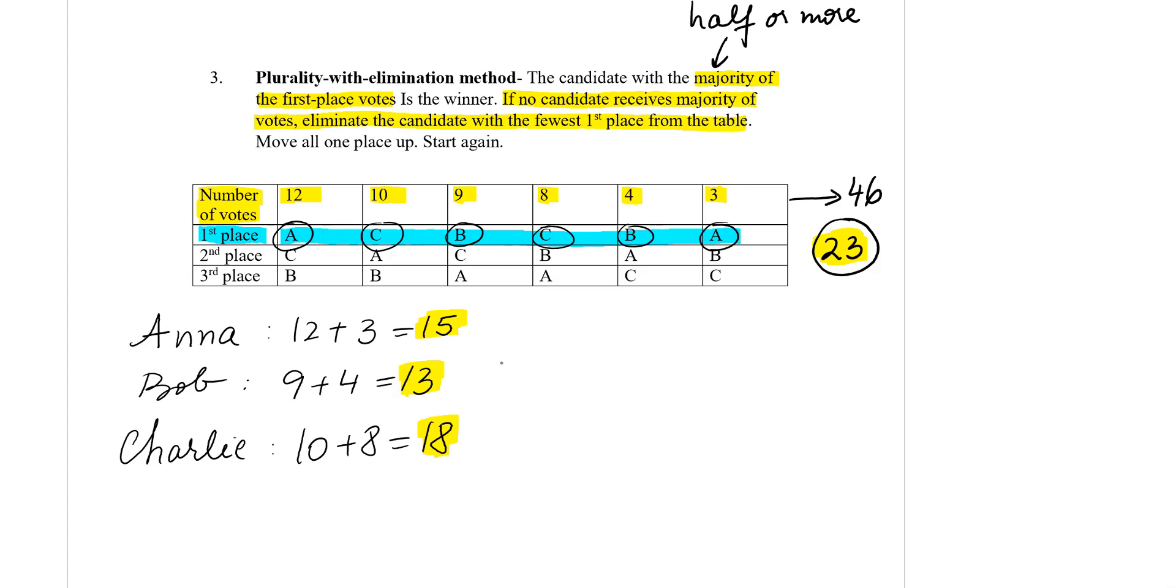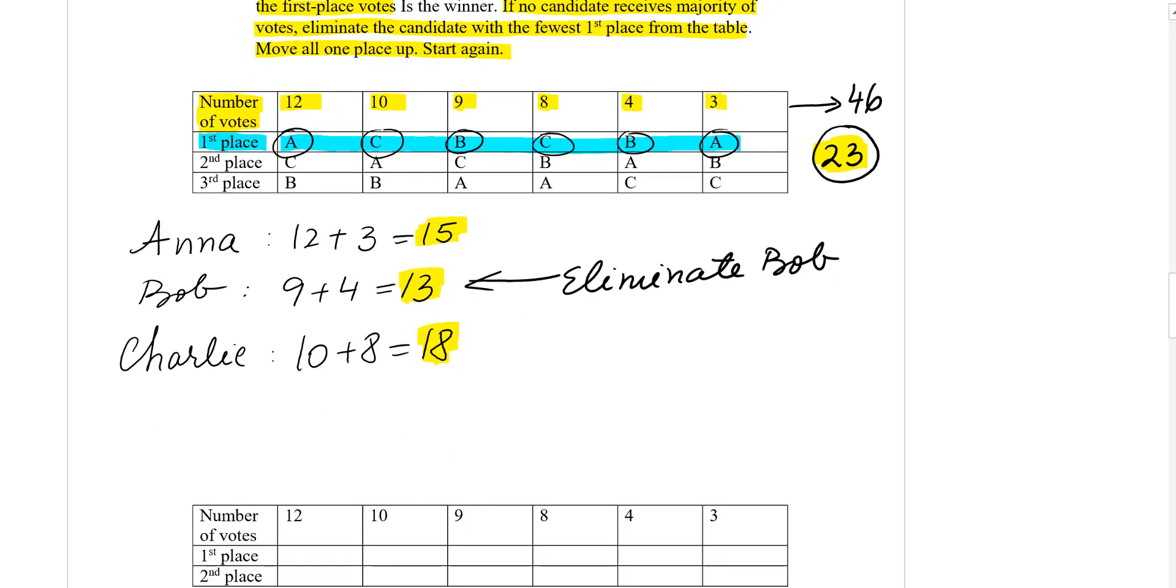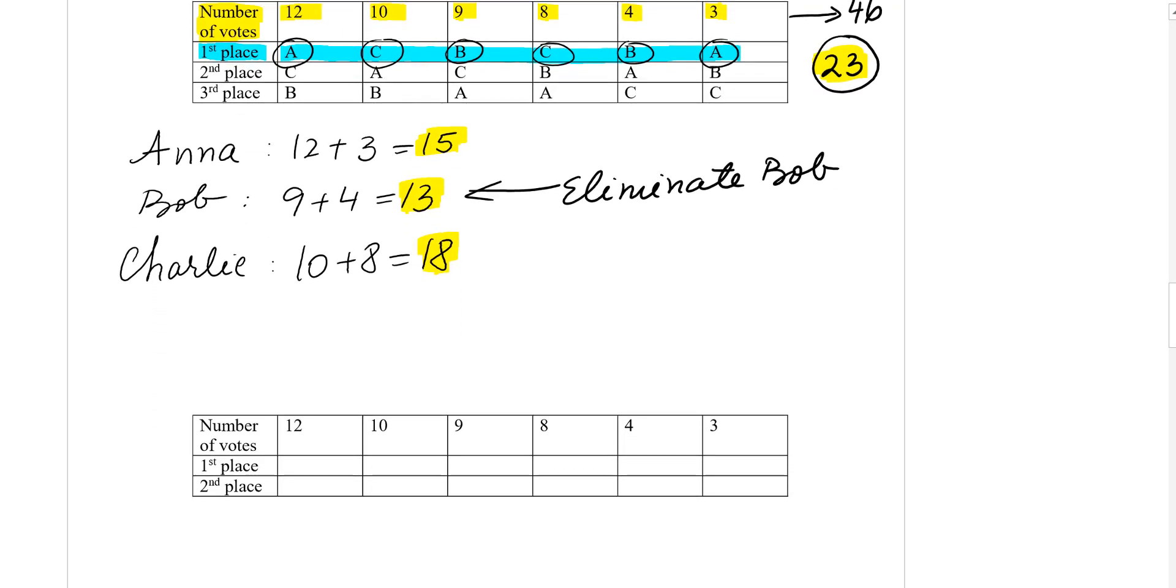So the candidate with the fewest is Bob. Eliminate Bob and move all one places up. So basically we make another table where we'll eliminate Bob. I'm going to highlight it in purple.